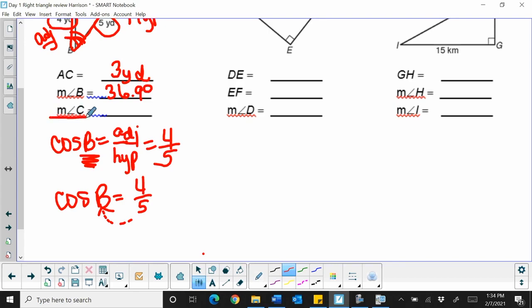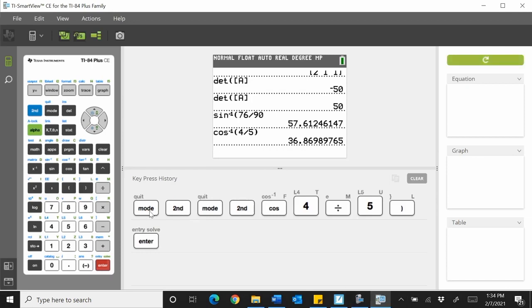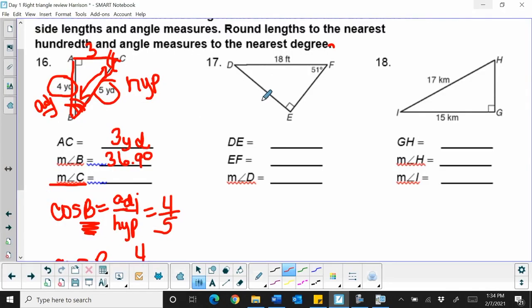Now, I could do another trig function to find angle C, but what do I know about the relationship between these two angles? They are complementary. So I can just take 90 minus 36.9, and I can find the other angle is 53.1.